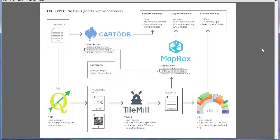I've put together a map of the ecology of web GIS to show you what some of these tools are and how they relate to creating online-based interactive maps. At the top you'll see the results, all of which are web-mapped. These are the processes of how to get from your table data — some kind of information about data points with geographic references — to each of these web maps. As you go up, the difficulty increases but you also get a lot more opportunity for customization.